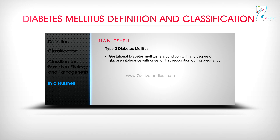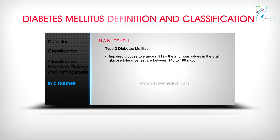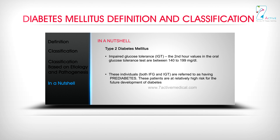Gestational diabetes mellitus is a condition with any degree of glucose intolerance with onset or first recognition during pregnancy. Impaired fasting glucose (IFG) refers to fasting plasma glucose levels between 100–125 mg/dL. Impaired glucose tolerance (IGT) refers to second-hour values in the oral glucose tolerance test between 140–199 mg/dL. Both IFG and IGT individuals are referred to as having pre-diabetes and are at relatively high risk for the future development of diabetes.